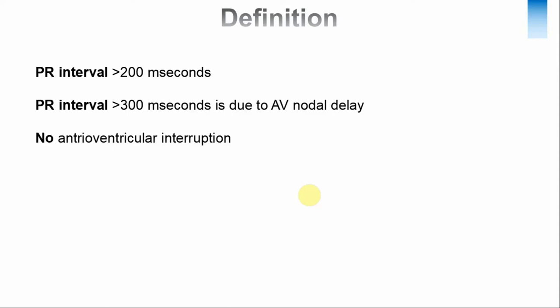Another important diagnostic criterion for first degree heart block is that there will be no atrioventricular interruption — all atrial impulses will go to the ventricles. There is no AV dissociation. If there is AV dissociation, that would be a complete heart block, which is completely different.